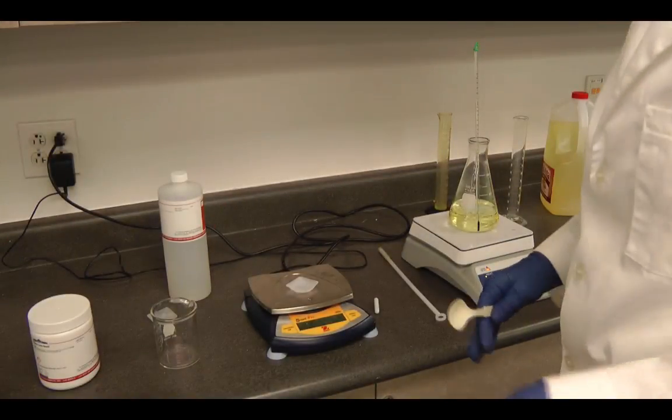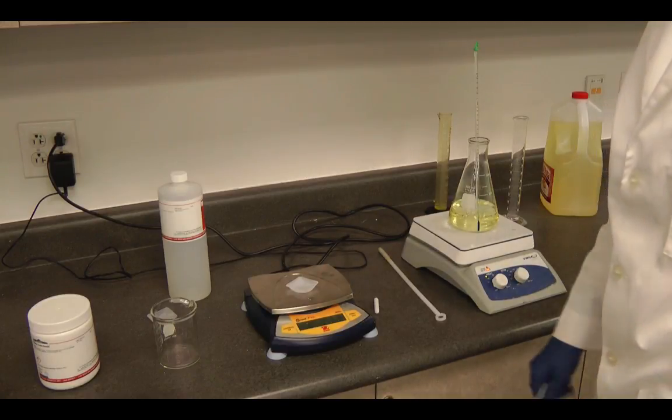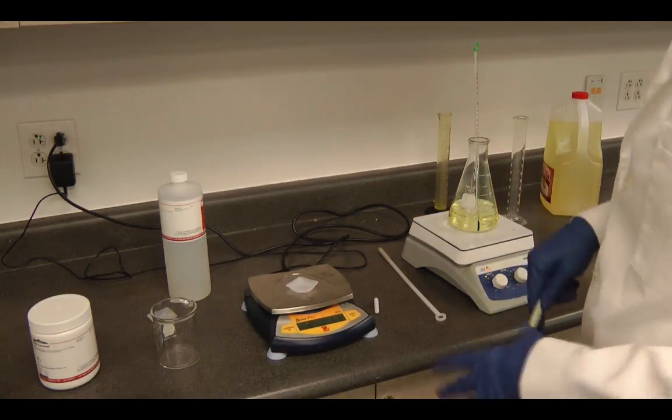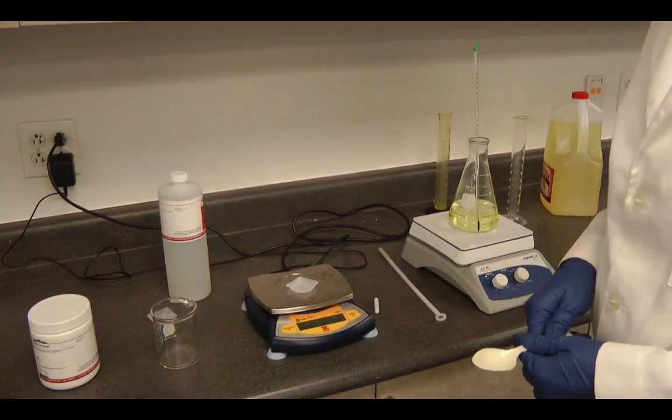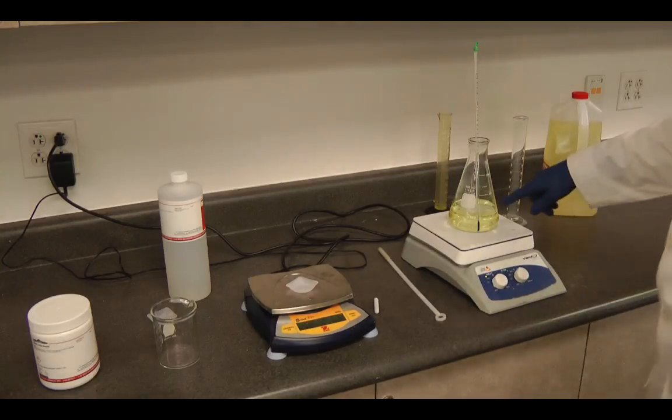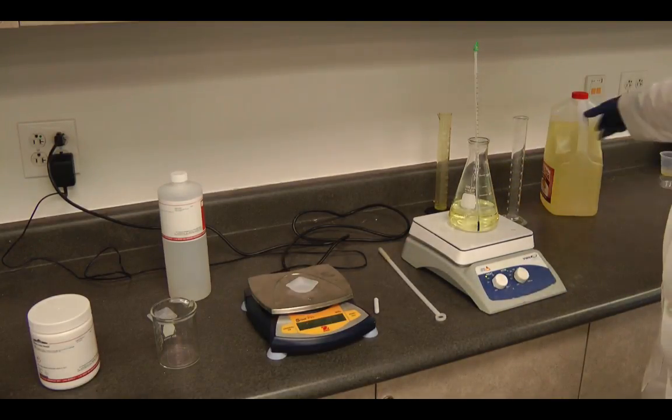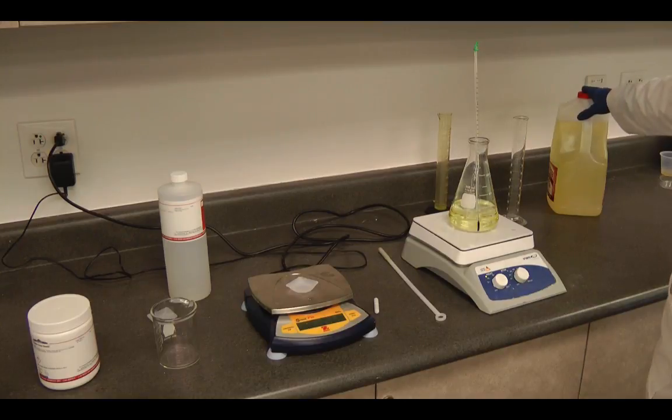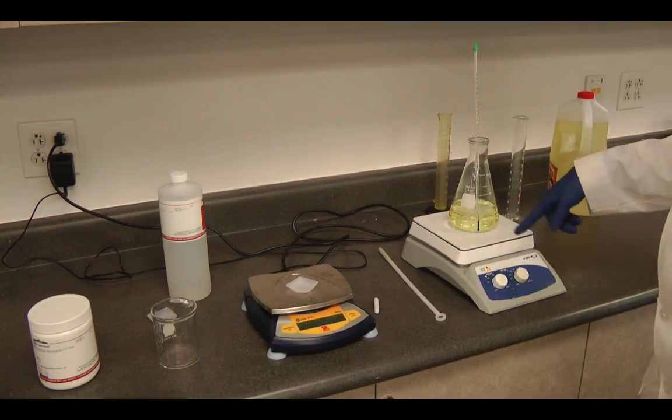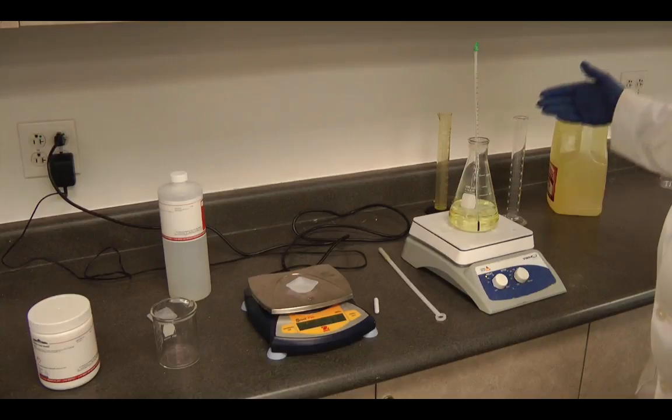Okay, so we're going to do the transesterification reaction to make biodiesel from some vegetable oil. Right here I have 200 milliliters of just some vegetable oil, this is actually peanut oil, and it's in an Erlenmeyer flask on the stir plate.